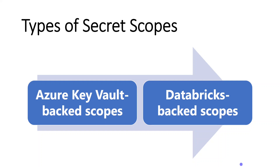With Azure Key Vault Backed Scopes, we maintain all the secrets within Azure Key Vault and create a secret scope in Databricks — integrating Databricks with Azure Key Vault. When this backed scope is created, Databricks can seamlessly talk to Azure Key Vault and retrieve keyword passwords dynamically at runtime whenever needed. That value cannot be printed in the Databricks environment, so it's very secure and no one can misuse sensitive information.